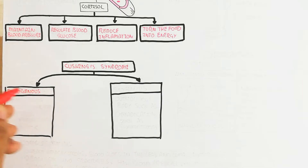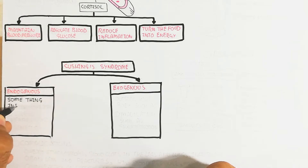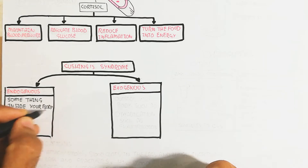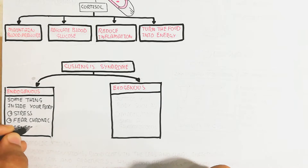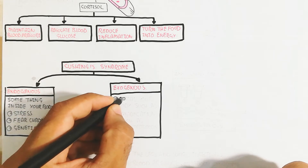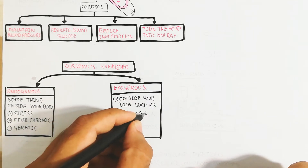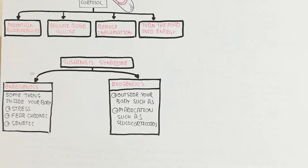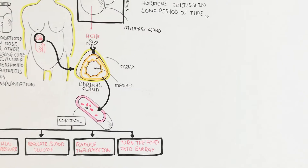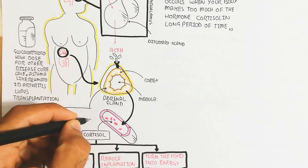Cushing's syndrome can be endogenous or exogenous. Endogenous means something inside your body — for example, stress, fear, chronic genetic or physiological changes. Exogenous means outside your body, such as medications like glucocorticoids taken as medicine. Both can lead to Cushing's syndrome, which can be treatable and curable if diagnosed early.